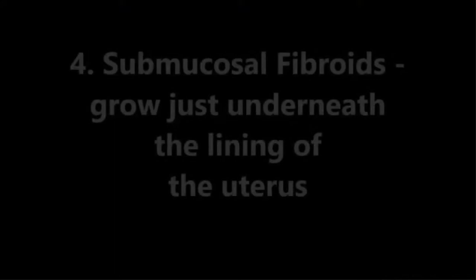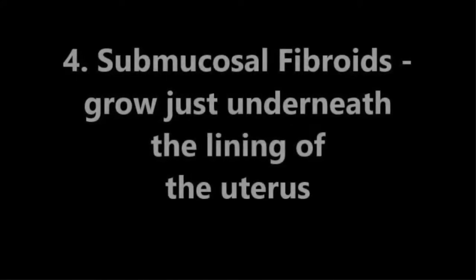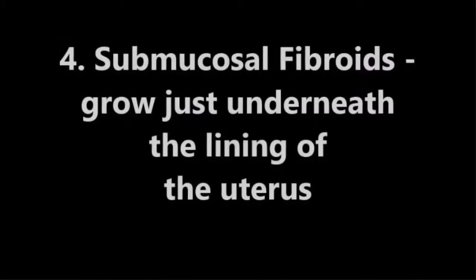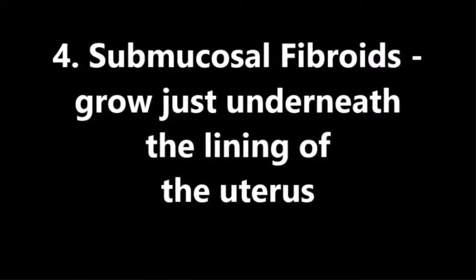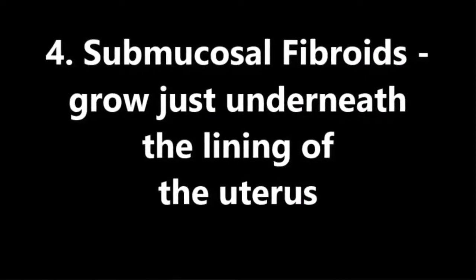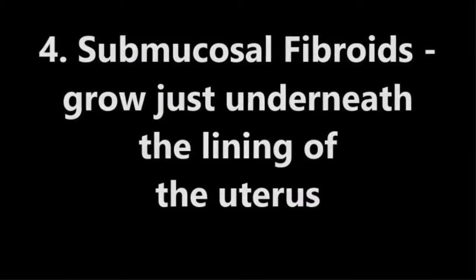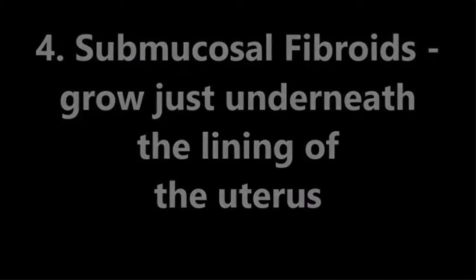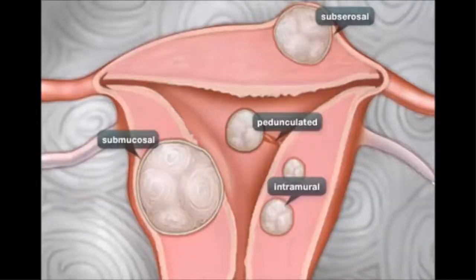Fourth, submucosal fibroids. These fibroids grow just underneath the lining of the uterus. These fibroids are also associated with long, heavy periods. They can also cause problems for women who are trying to get pregnant. From the diagram, you can see an example of the submucosal fibroid.